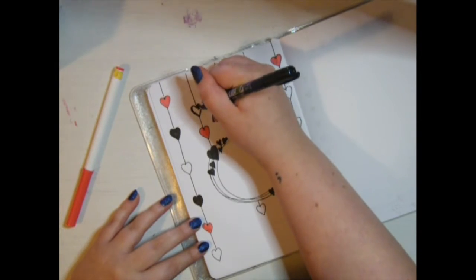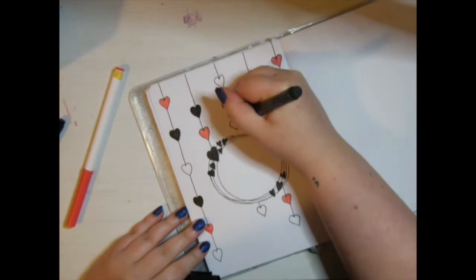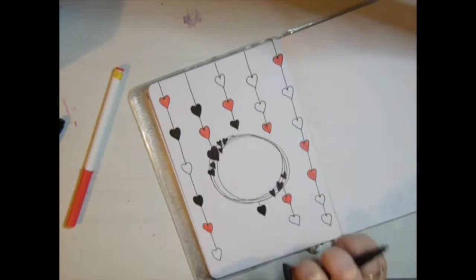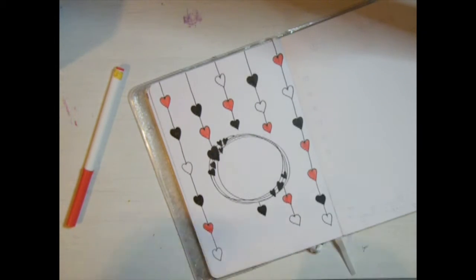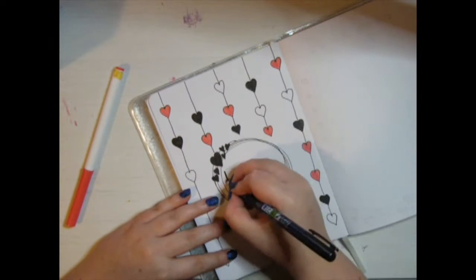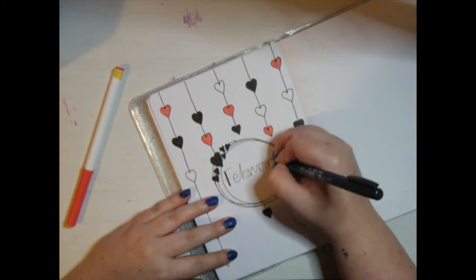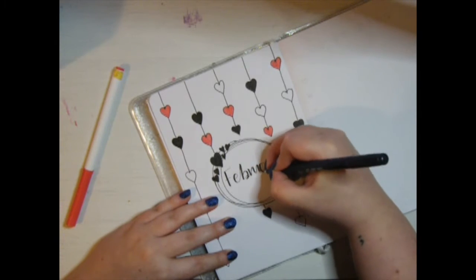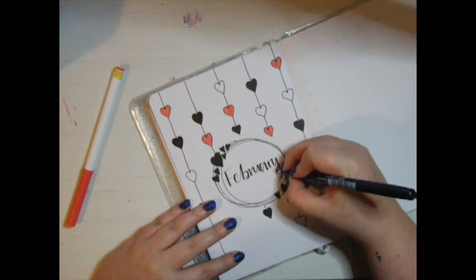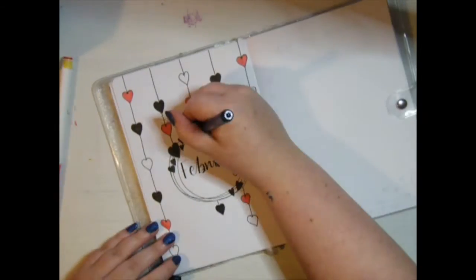I started off using my Tombow Fudenosuke to color in the black hearts, but that was running out of ink, so I switched to a thicker Faber Castell 1.5. For the titling I decided to stick with my Tombow Fudenosuke because I like the streakiness that came with the ink running out. The title page was a complete copy of her title.